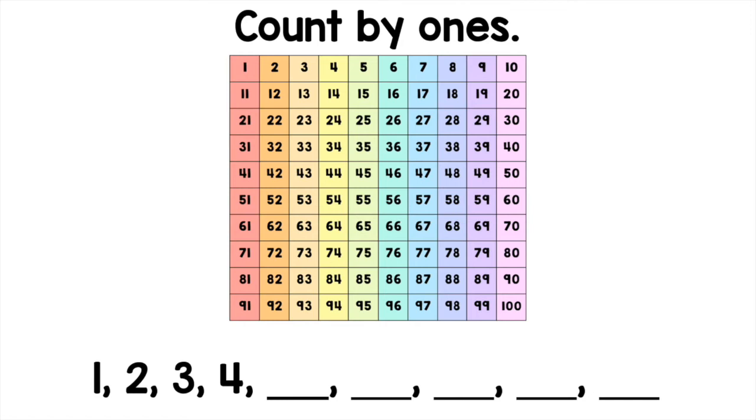On the bottom of the screen, I have the numbers 1, 2, 3, and 4. Let's go ahead and find those numbers on the 100 chart: 1, 2, 3, 4.